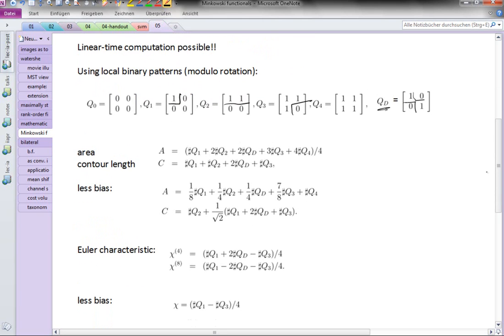This formula sort of makes sense. It's trickier for the Euler characteristic, and you can derive different formulas based on the four or on the eight neighborhood. Both are biased but in opposite directions, so it's a good idea to take an average of these two formulas, which however is unfortunately still biased.